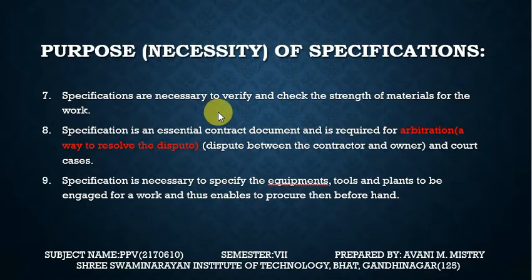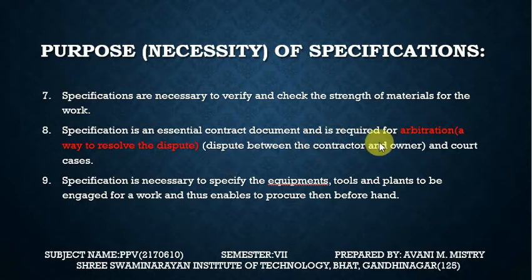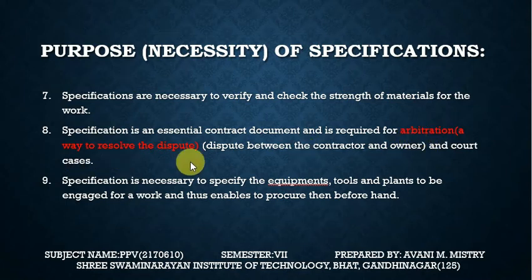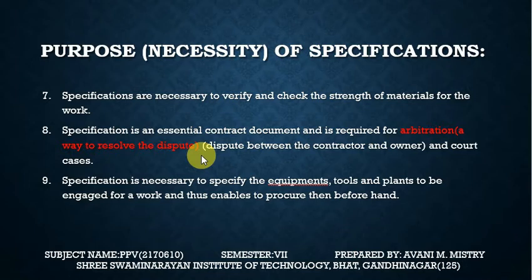Specifications are necessary to verify and check the strength of the material of the work. Specification is an essential contract document and is required for arbitration — that means a way to resolve disputes. If the owner says the work was not done as per the specification, or there is a billing problem, any dispute or court case between the contractor and owner can be resolved with the help of the specification.